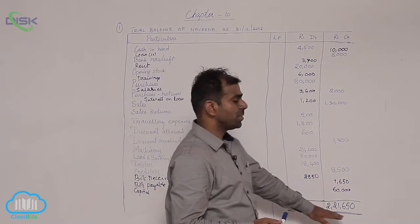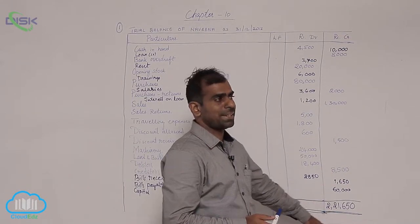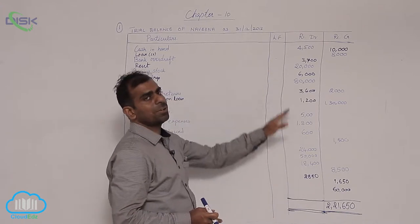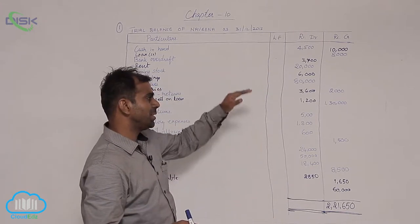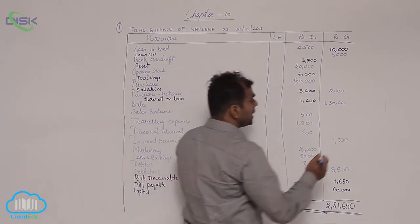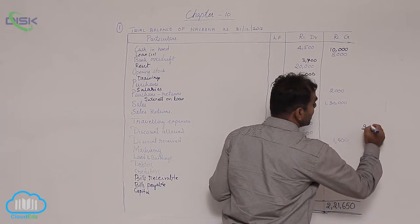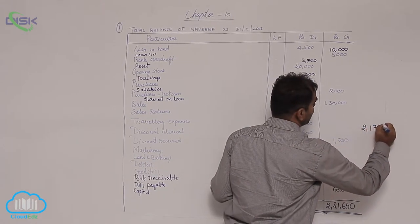Now, on the credit side as you know we have the total of 2,21,650. We will total the debits. When we total the debits, we are getting the total as 2,17,150.